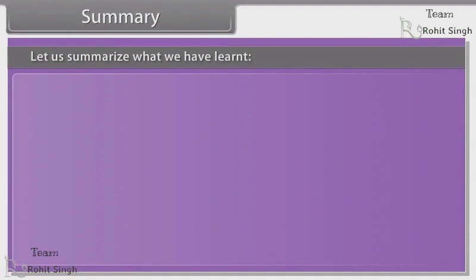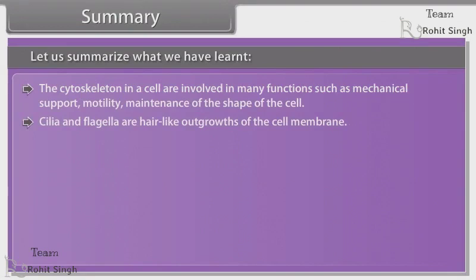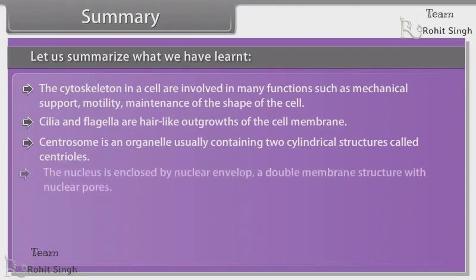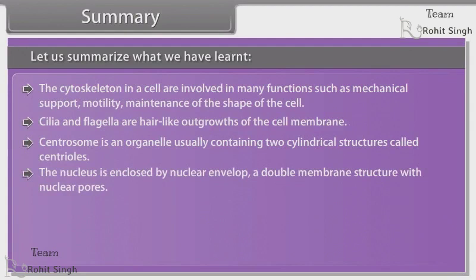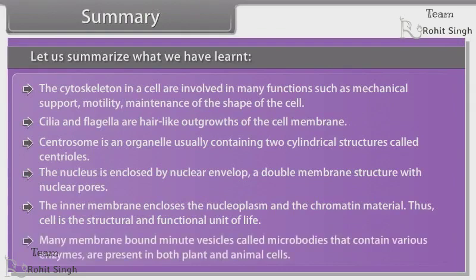Summary. The cytoskeleton in a cell is involved in many functions such as mechanical support, motility, and maintenance of the shape of the cell. Cilia and flagella are hair-like outgrowths of the cell membrane. Centrosome is an organelle usually containing two cylindrical structures called centrioles. The nucleus is enclosed by a nuclear envelope, a double membrane structure with nuclear pores. The inner membrane encloses the nucleoplasm and the chromatin material. Thus, the cell is the structural and functional unit of life. Many membrane-bound minute vesicles called microbodies, containing various enzymes, are present in both plant and animal cells.